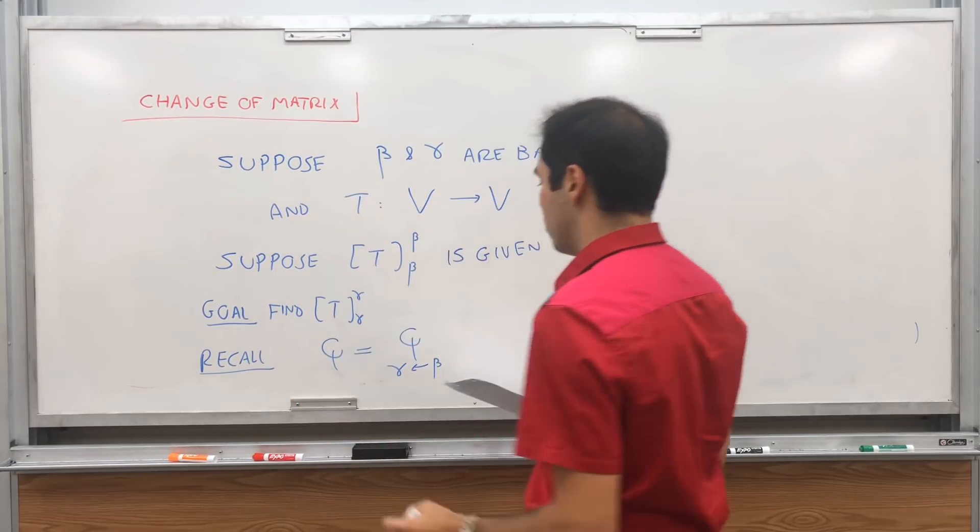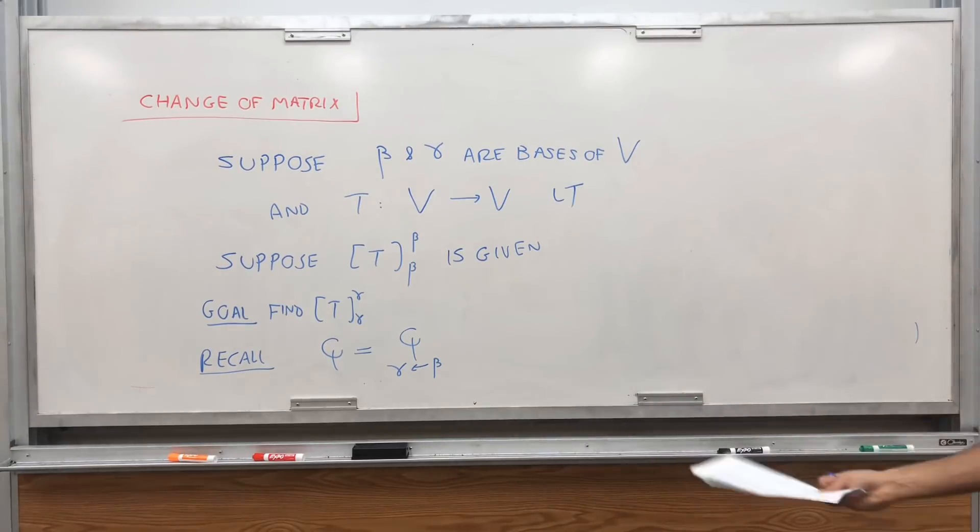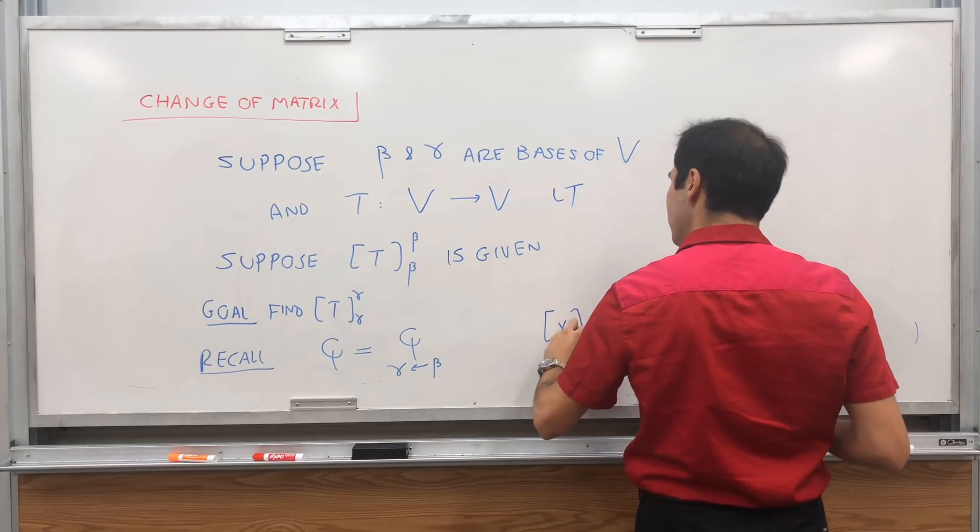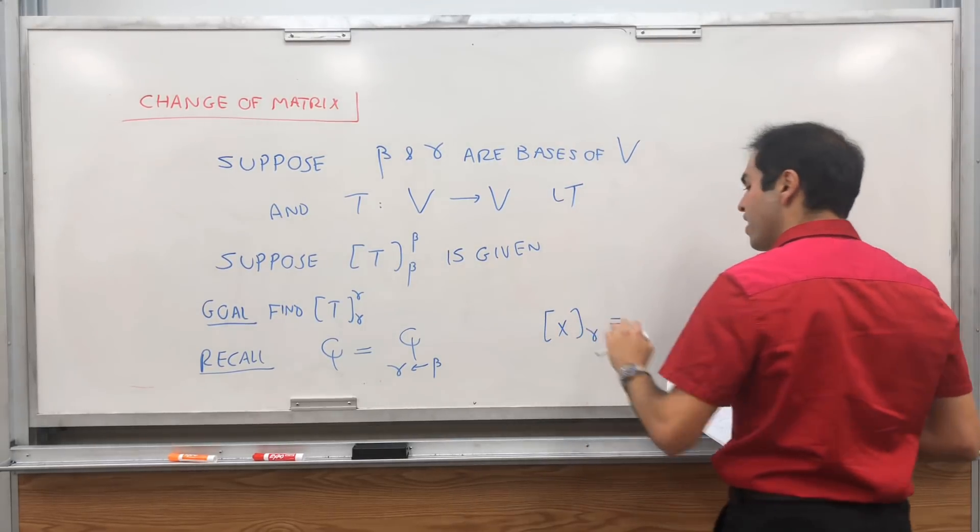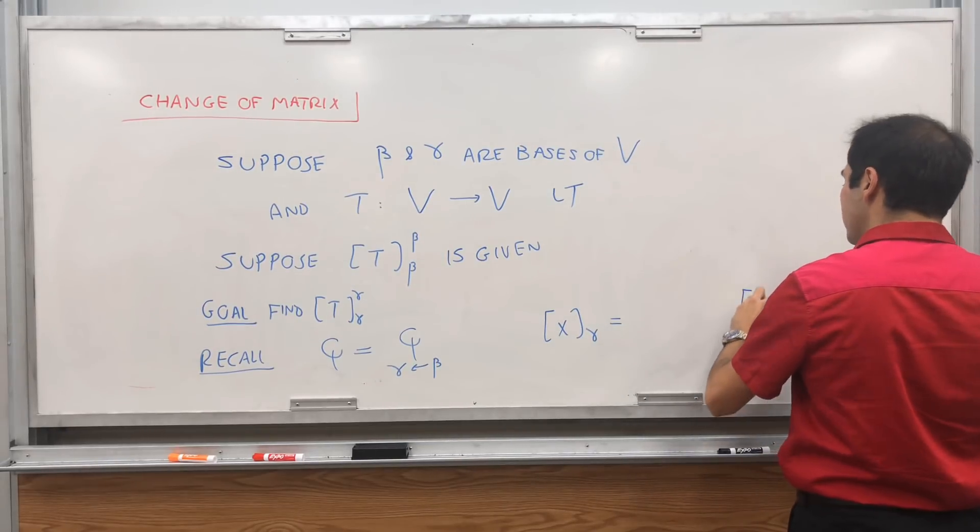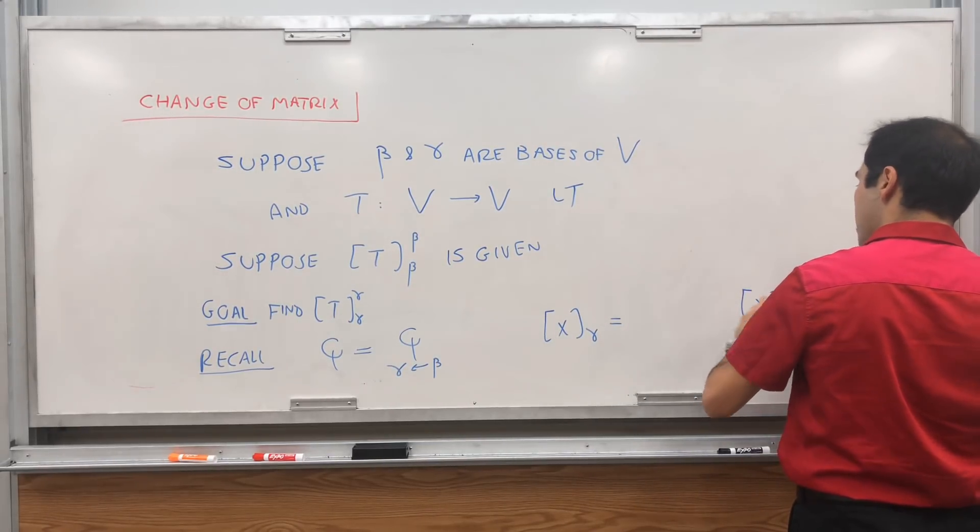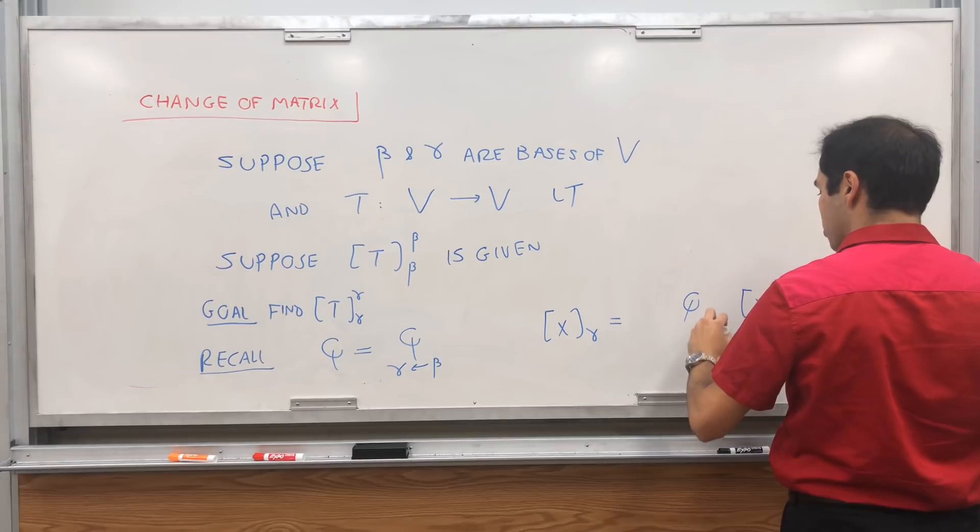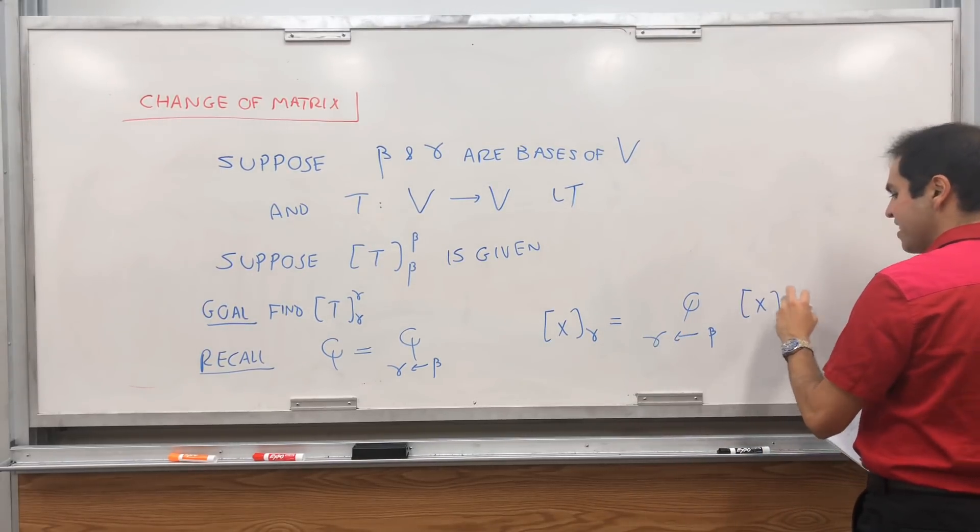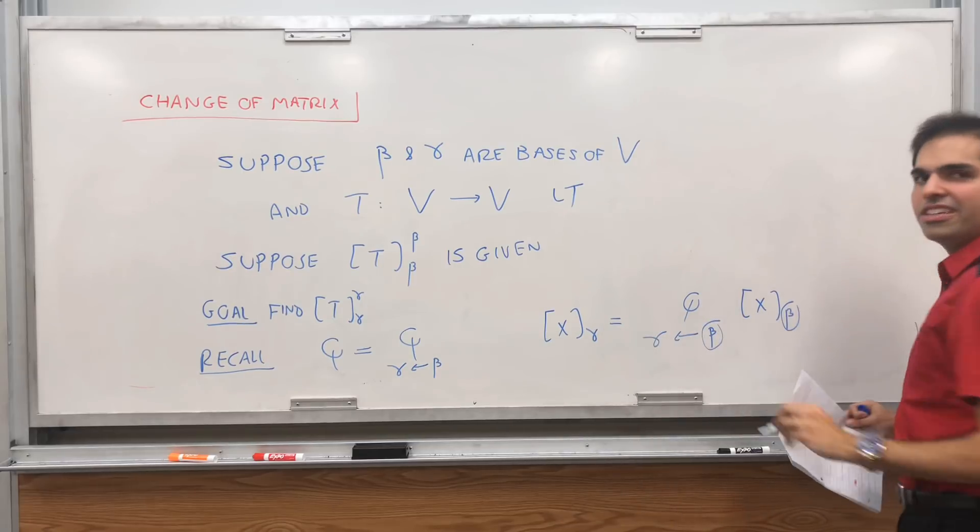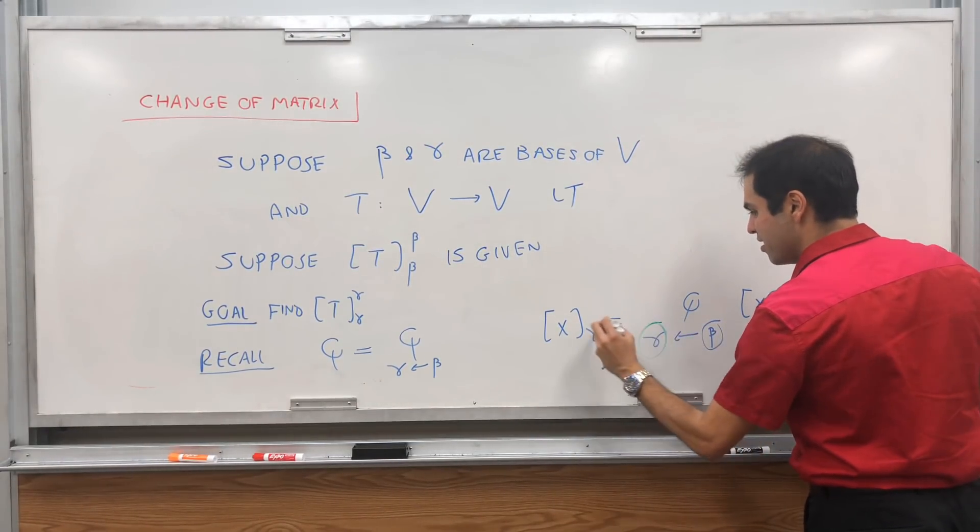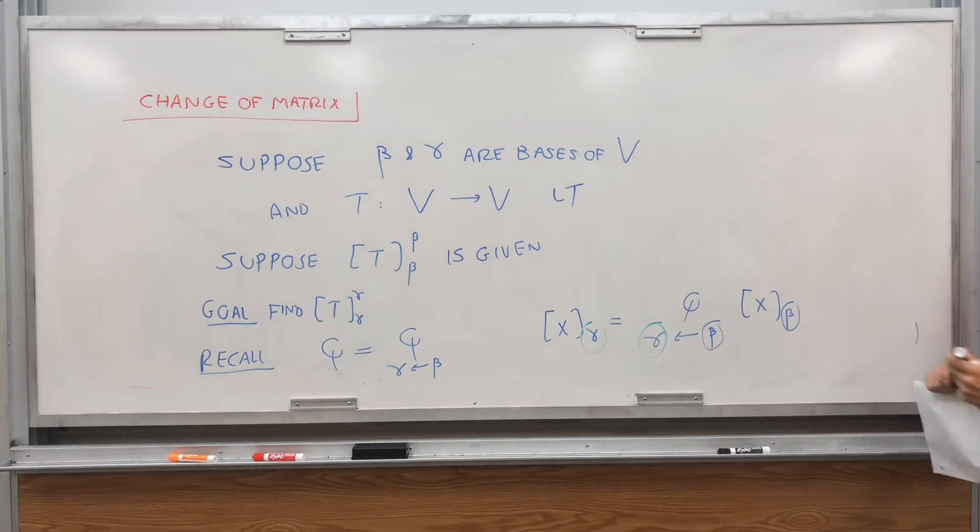Q, so like Q_B, which is Q from beta to gamma, has a property that if you take any vector X and evaluate it with respect to the new coordinates, you just take the old coordinates and multiply it by this matrix Q. The awesome thing is this way it's very easy to remember the formula, you just follow the arrows. You go from right to left.